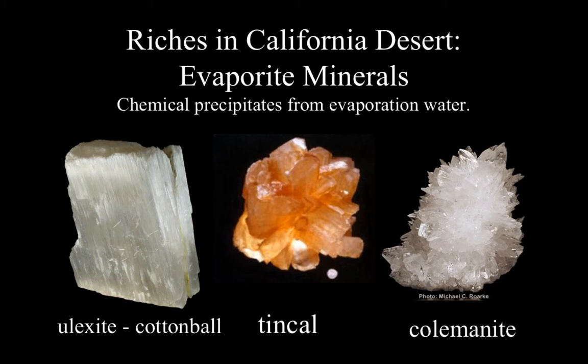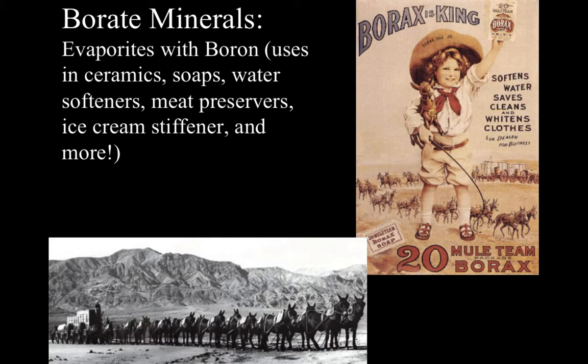Because of the volcanic activity occurring in the Basin and Range and Mojave Desert region in the past, some of those volcanic gases intermixed with ice age lake deposits and precipitated these borate minerals. As the lake levels dried up, these evaporite minerals formed. Their uses include ceramics — making that nice polish on bathroom fixtures like bathtubs and sinks — detergents, whiteners, water softeners, meat preservation, and even ice cream to make it stiffer.